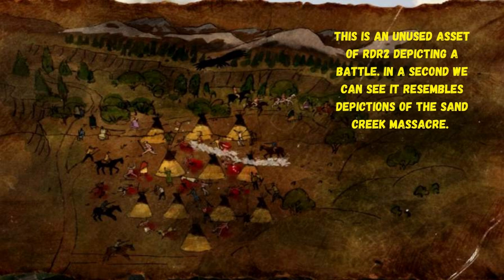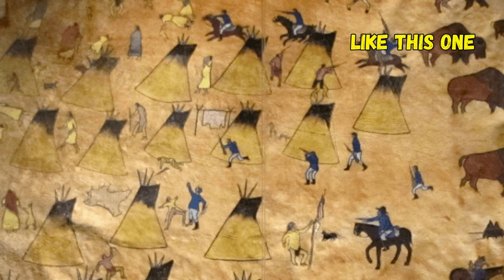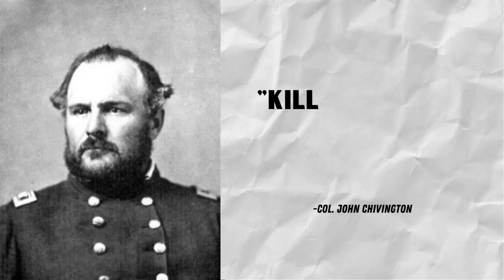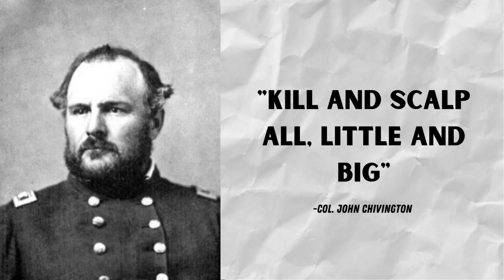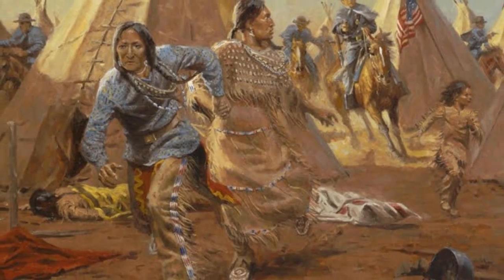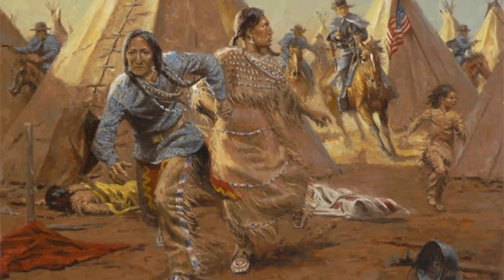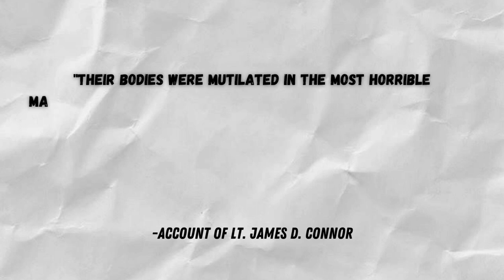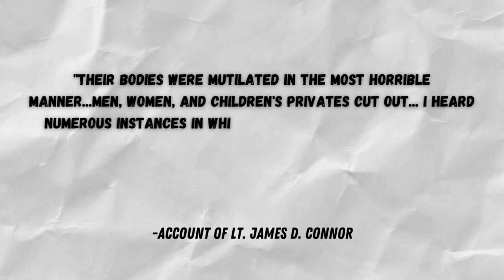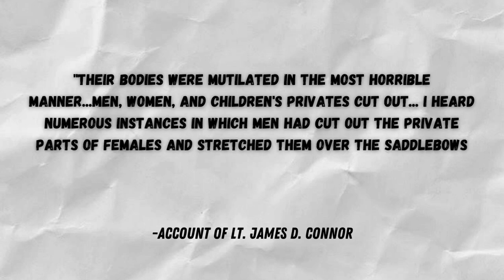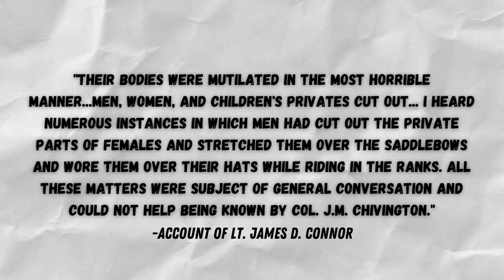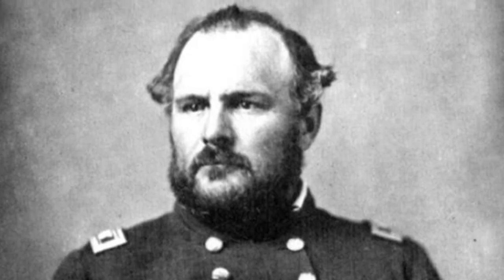The 1864 Sand Creek Massacre took place in southeastern Colorado. Colonel John Chivington led an attack on tribes in Sand Creek with an army 700 strong. Before the massacre occurred, Chivington was informed that the tribes were camped under a white flag of truce. However, Chivington — known as a rabid Indian hater and quoted saying 'kill and scalp all, little and big' — continued with his plans. After the men had left to hunt, his regiment attacked, resulting in the slaughter of about 230 Cheyenne and Arapaho people, consisting mostly of women, children, and elderly. Nearly all were killed and their deaths were followed by horrible mutilation. Lieutenant James D. Connor recounted: 'Their bodies were mutilated in the most horrible manner — men, women, and children's privates cut out. I heard of numerous instances in which men cut out the private parts of females and stretched them over the saddle bows and wore them over their hats while riding in the ranks.'